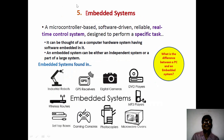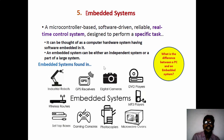Finally, the last technology is the embedded system. This involves both hardware and software together — a microcontroller-based, software-driven, reliable real-time control system designed to perform a specific task. For example, a washing machine is designed specifically to wash clothes. Examples of embedded systems include digital cameras, DVD players, microwave ovens, and industrial robots.